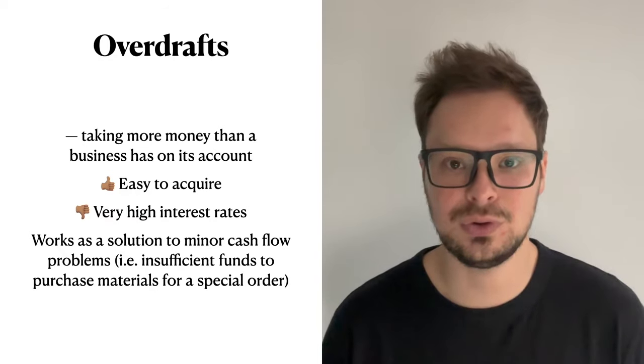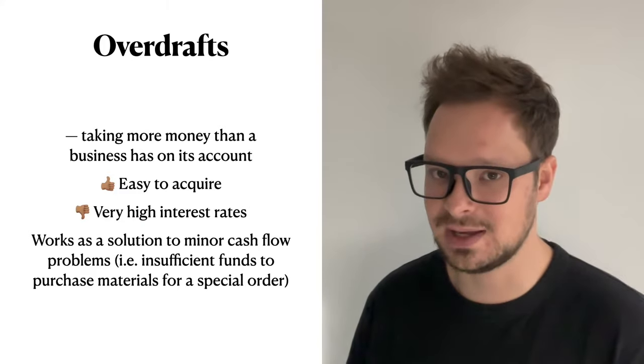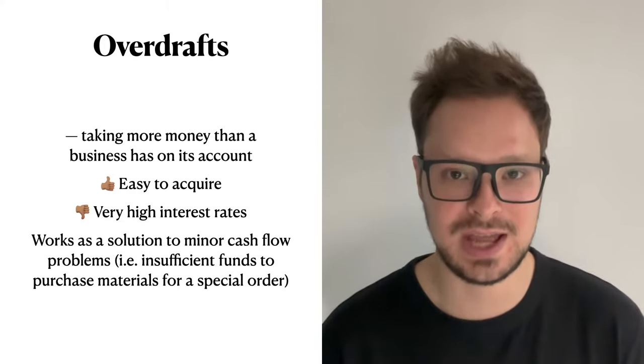The next source of finance is overdrafts. An overdraft is an agreement with a bank where you can use money that you don't have. For example, if your business bank account reaches zero and you normally can't buy anything, with an overdraft you can go down to minus $10,000, $20,000, or even a few million dollars — it depends on the agreement with the bank.